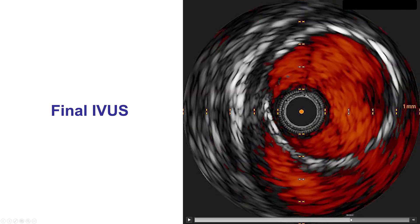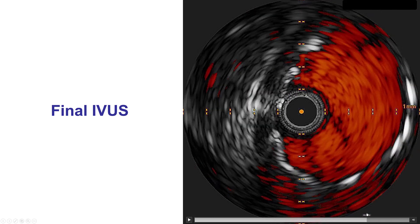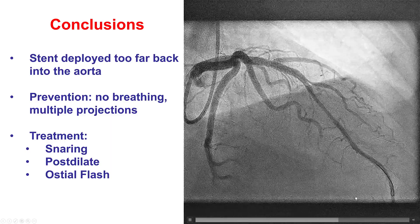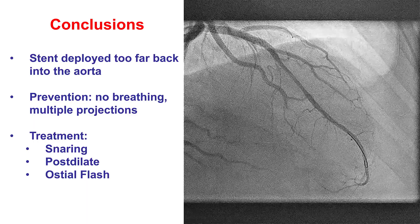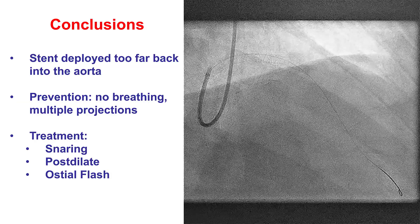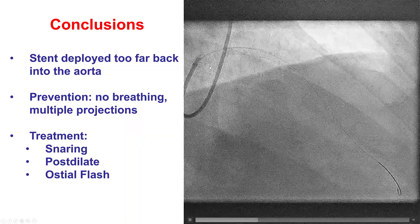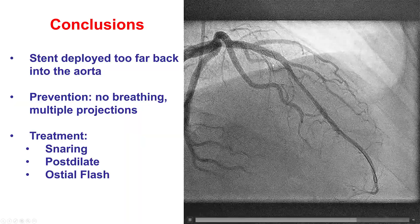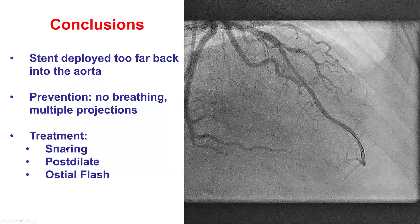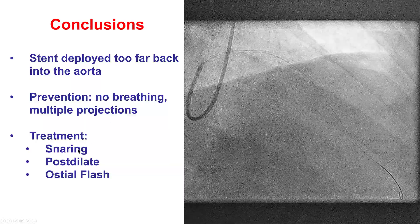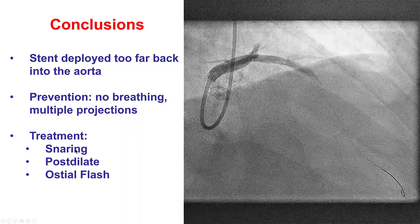The stent is actually protruding all the way into the aorta. In summary, this is a case in which there was movement of the stent during deployment that led to geographic miss — missing the lesion — and led to stenting the left main, which did not have any significant disease. What could have been done is to take the stent out by snaring it, but this potentially could carry the risk of injuring the vessel.